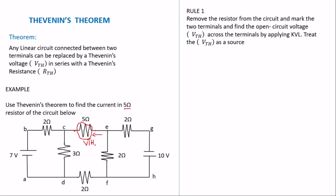First, we replace the 5-ohm resistor with Vth, choose your direction, and find Vth. To find Vth we apply the KVL rule, taking loop by loop. We have loop BCDA as the first loop, then another loop, and another. Let's work through loop BCDA.